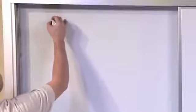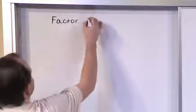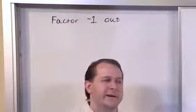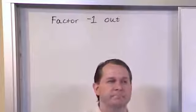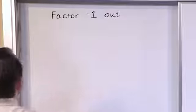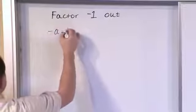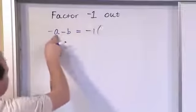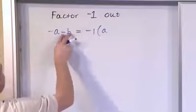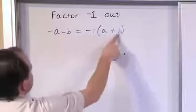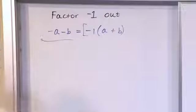Now let's get practice factoring negative 1 out of an expression — it's very useful. For negative A minus B, factor out negative 1: write negative 1 and open parentheses. Negative 1 times what gives negative A? That's A. Negative 1 times what gives negative B? That's positive B. So the factorization is negative 1 times (A + B). Check: negative 1 times A is negative A; negative 1 times B is negative B. Everything checks out.